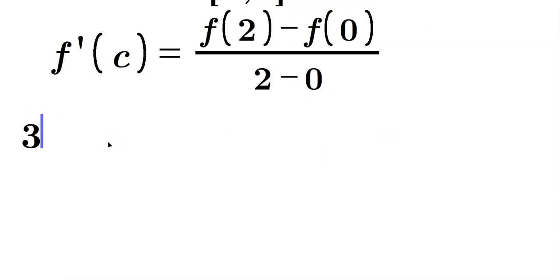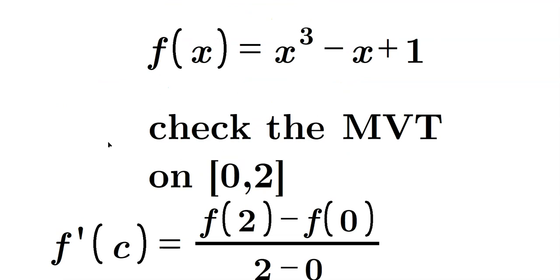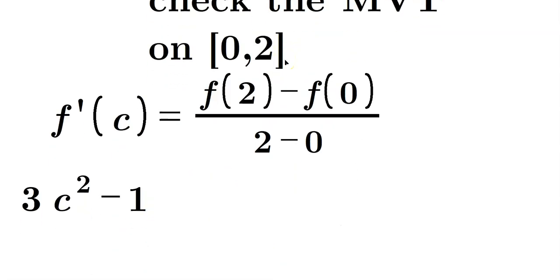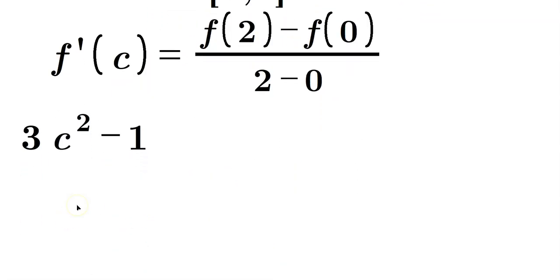So our derivative would be this, 3, and then it's evaluated at c. So you would put 3c squared and then minus 1. Our function is x cubed minus x plus 1. So differentiate by the power will become 3x squared minus 1. We'll place x with c. So you have 3c squared minus 1.